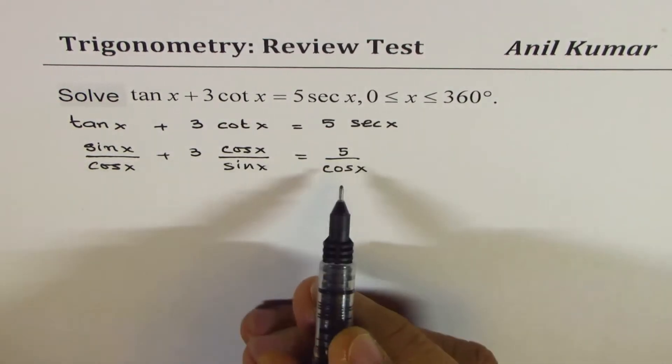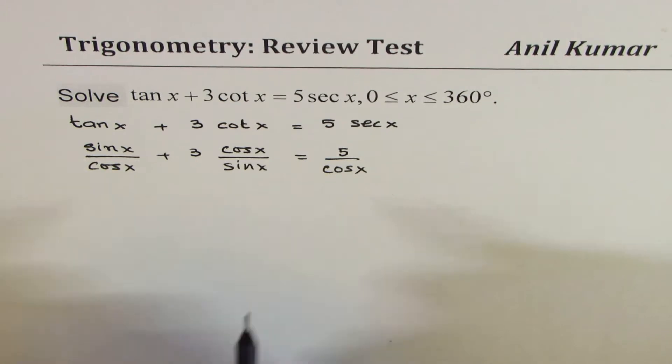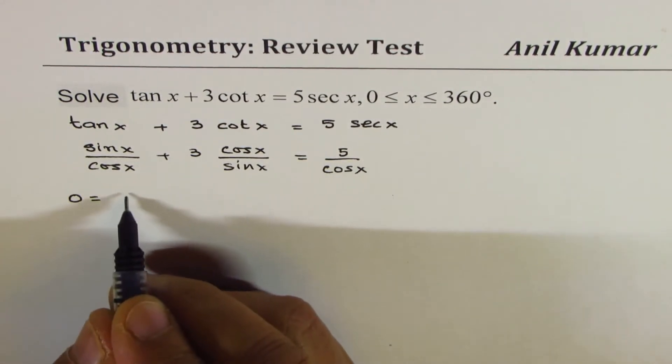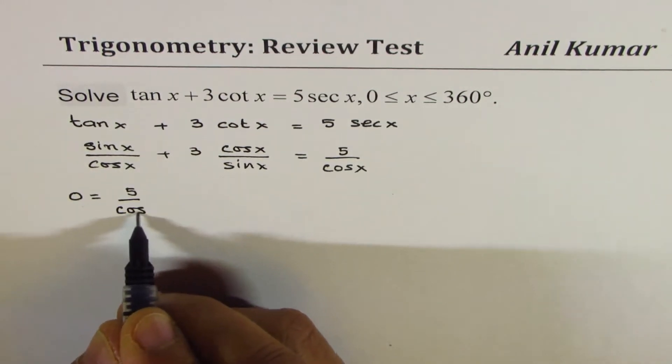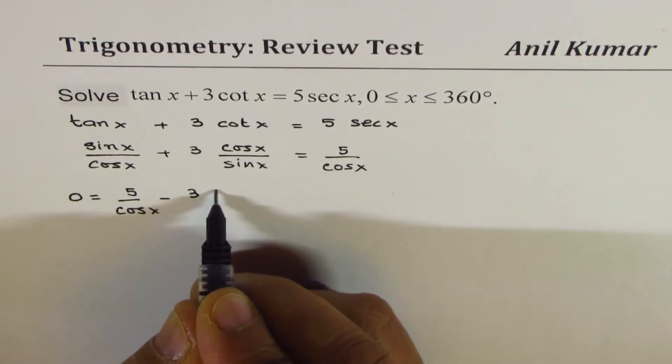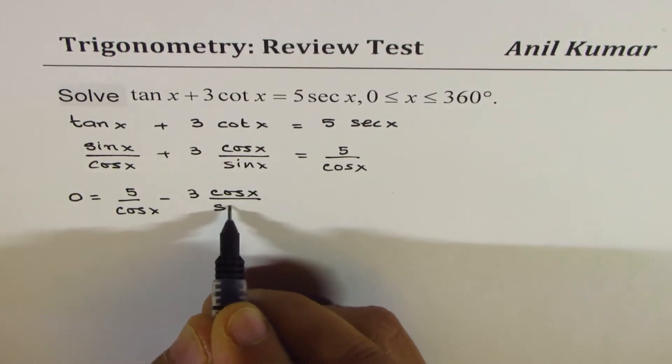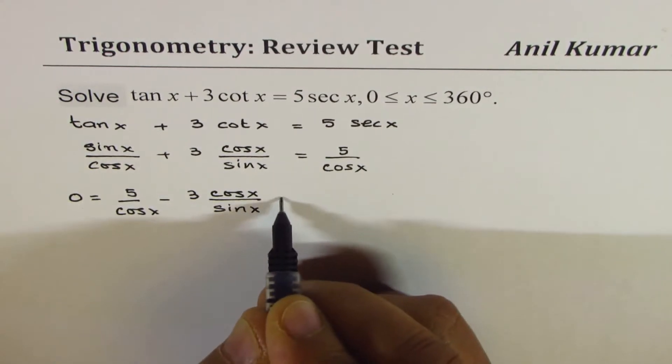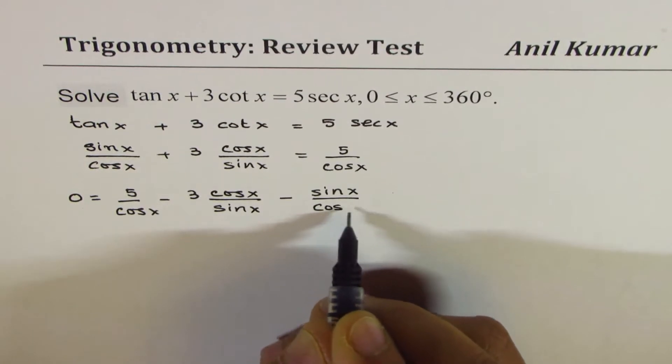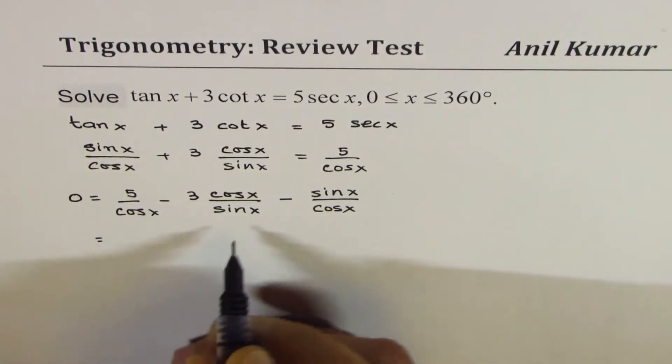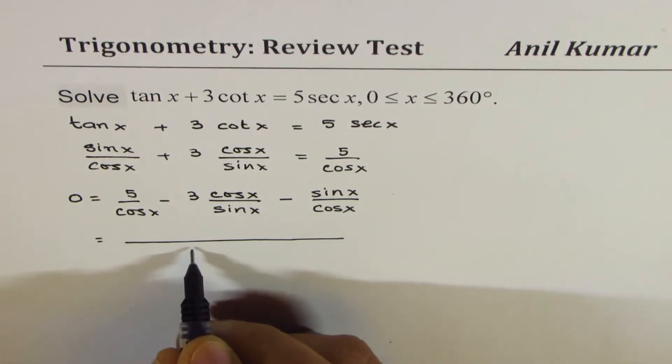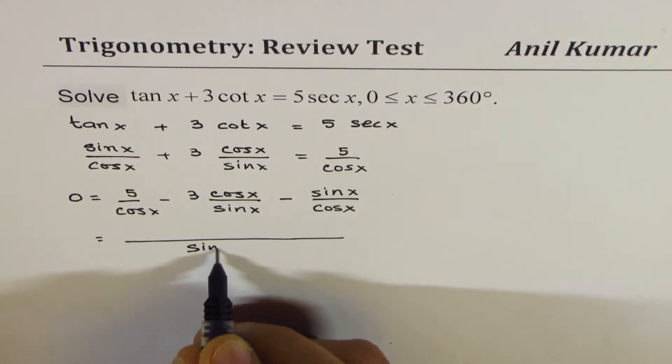Now we can bring all the terms together and then further solve the equation. Let's write 0 equals to, bringing all of them to the right side, we get 5 over cos x minus 3 cos x over sine x minus sine x over cos x. Now as we do with fractions, we can take a common denominator. In this case, the common denominator will be sine x cos x.